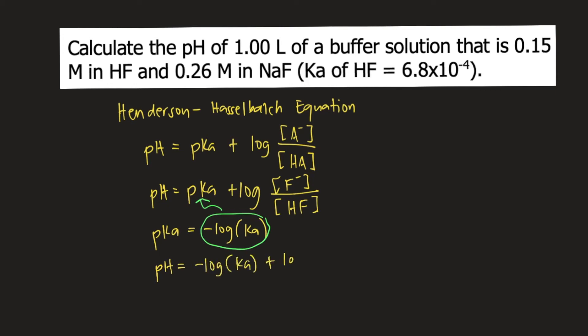So plugging in the values, pH equals negative log of Ka, which is given in the problem as 6.8 times 10 raised to negative 4, plus log of the concentration of F minus, which is 0.26 molar, divided by the concentration of HF, which is 0.15 molar.